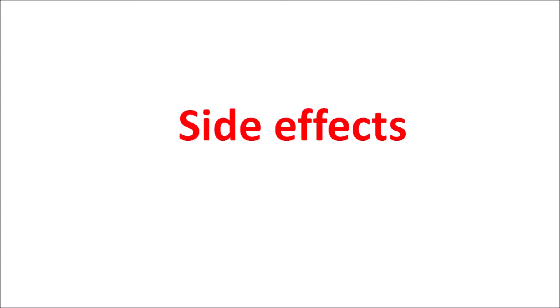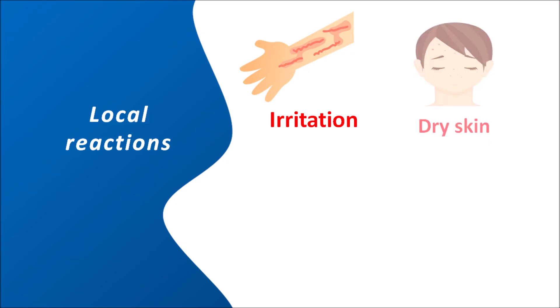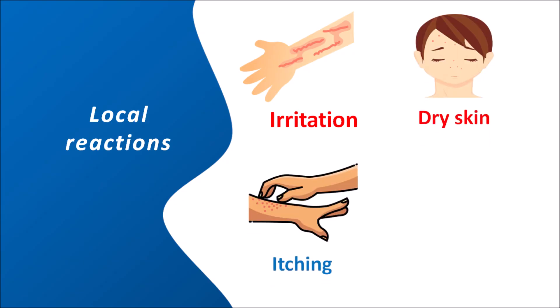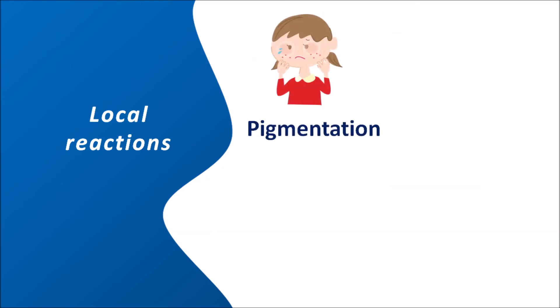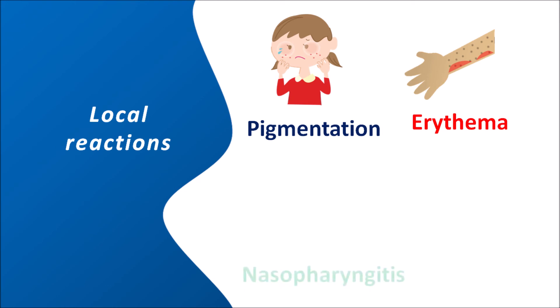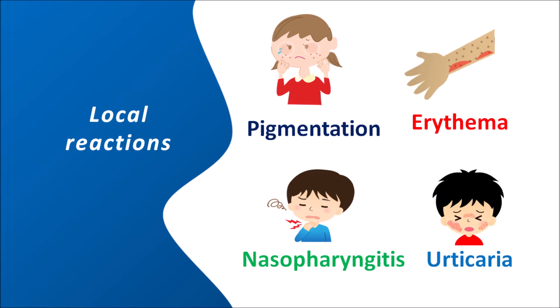The important side effects of Tretinoin are mainly local reactions. When this drug is applied, it can produce skin irritation, dryness of the skin, itching sensation, and burning as well as stinging sensation. It can also affect pigmentation — either increasing or decreasing it — so either hyper- or hypopigmentation can be observed with use of Tretinoin. Erythema, or redness of the skin, can also be observed. Tretinoin can also induce nasopharyngitis and increase urticaria.